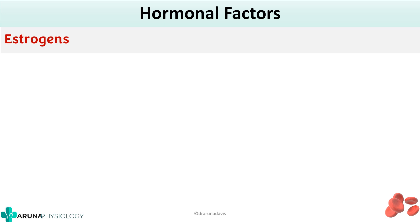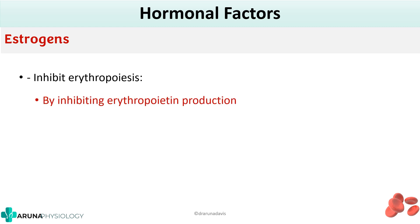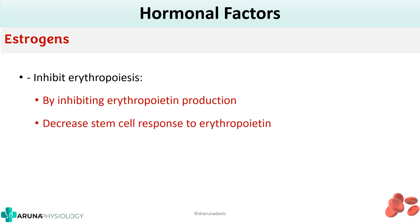The next hormone is estrogen. Just now we said androgens stimulate erythropoiesis — so what will estrogen do? It will inhibit erythropoiesis. Studies show that estrogens inhibit erythropoietin, though the effect is not as pronounced as androgens. How do they inhibit? By inhibiting erythropoietin production and decreasing the response of stem cells to erythropoietin. It is also mentioned that estrogens act to reduce hepatic globin synthesis — since hemoglobin needs the globin part, this can further affect erythropoiesis.